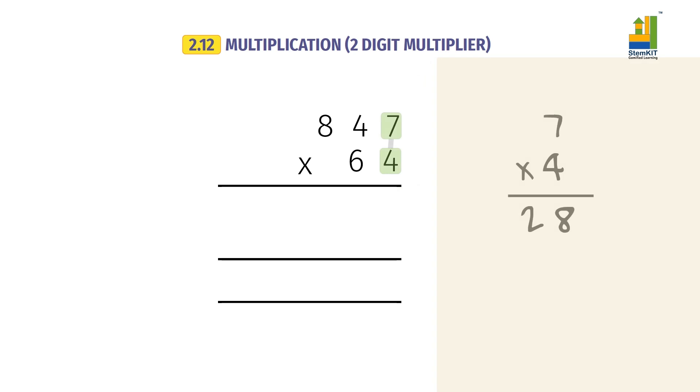First, we multiply the unit of the multiplier with the multiplicand. 7 into 4 equals 28. We write 8 and carry over 2.